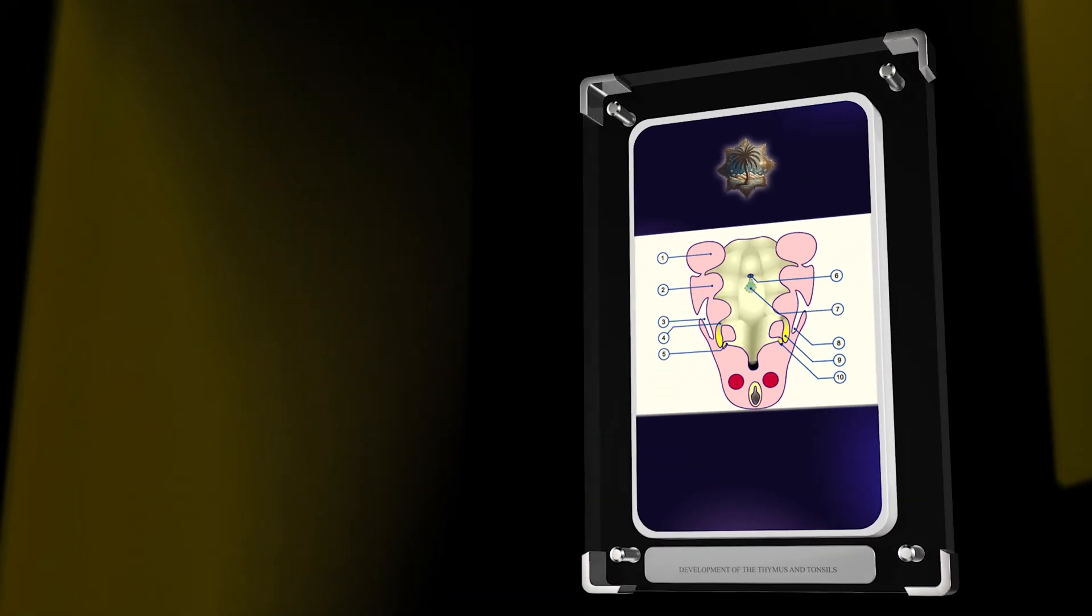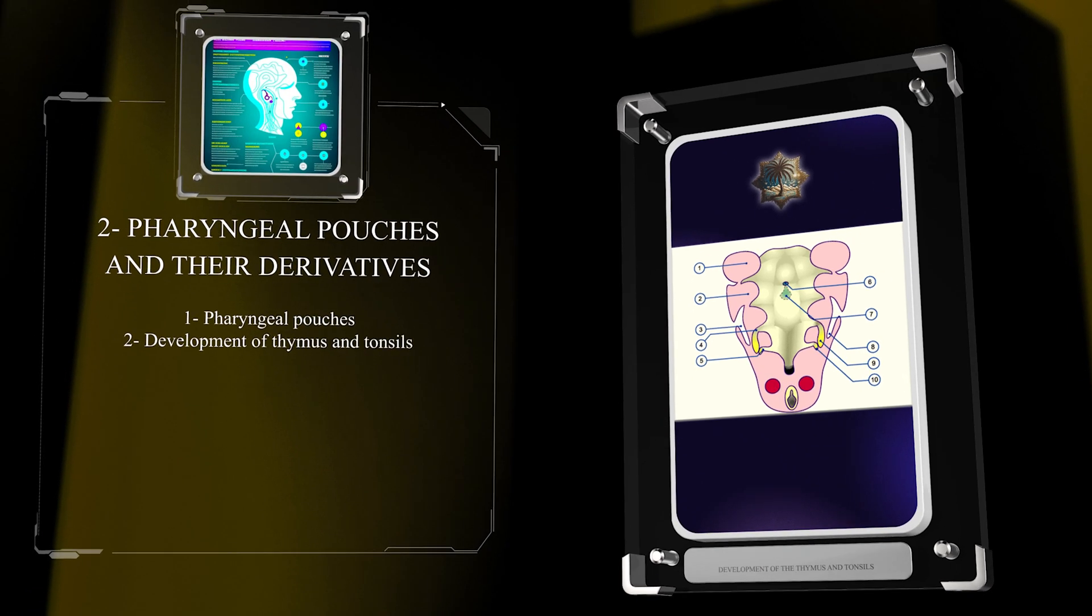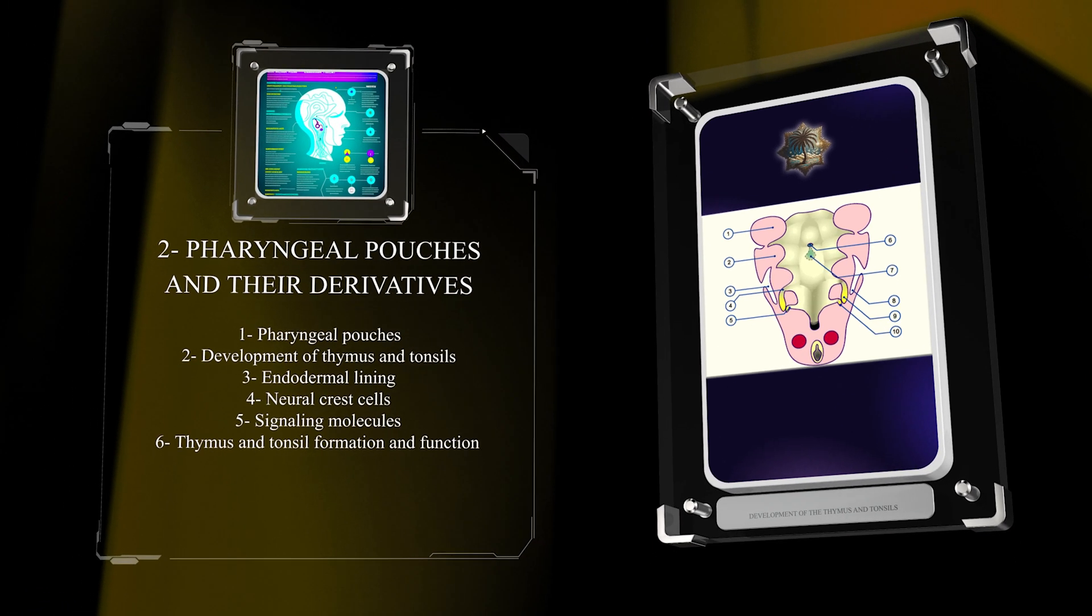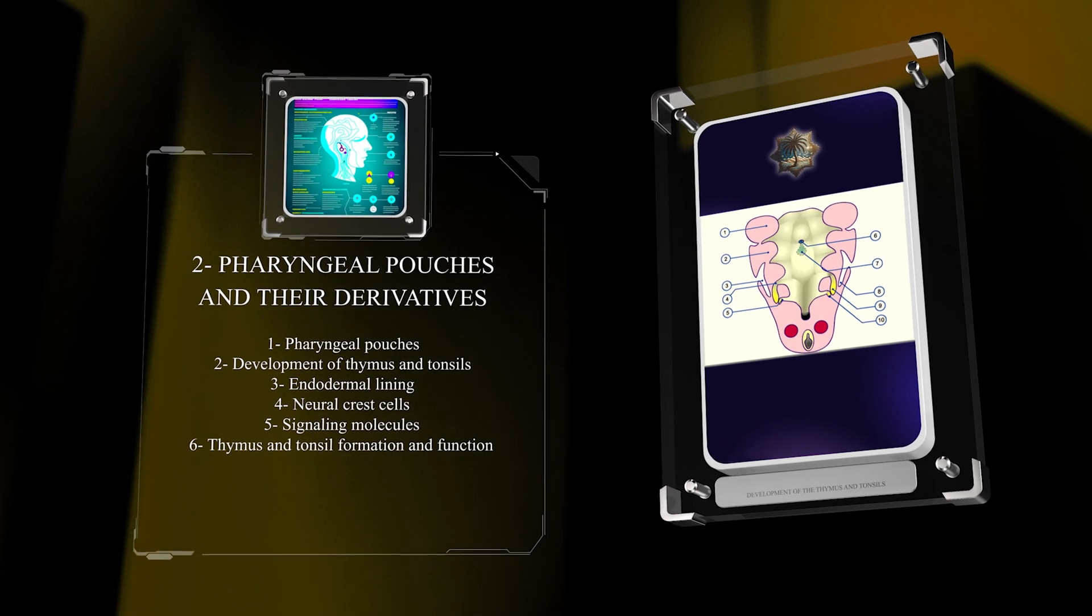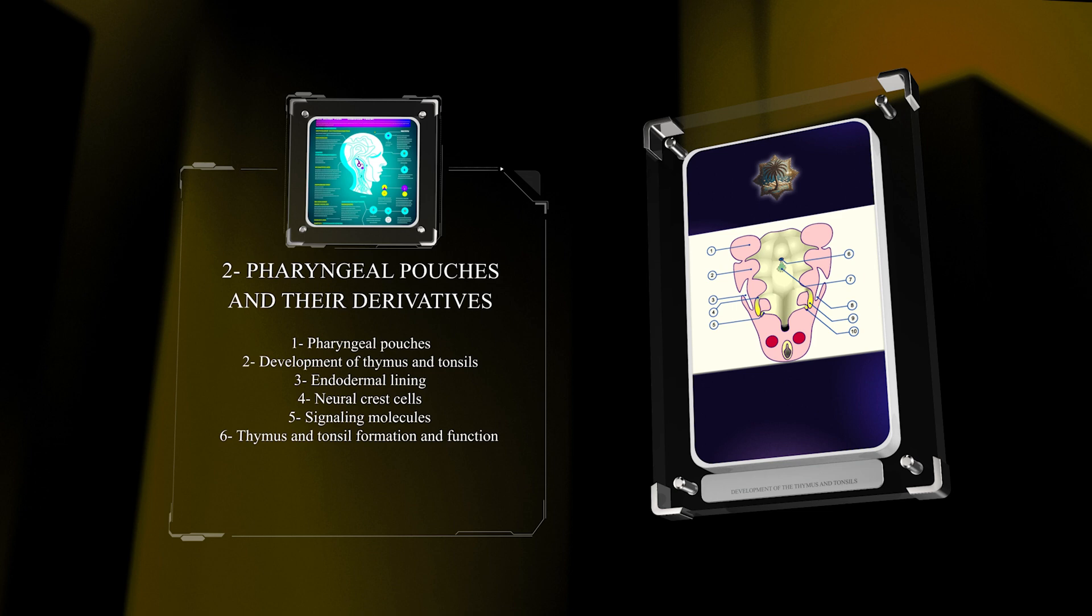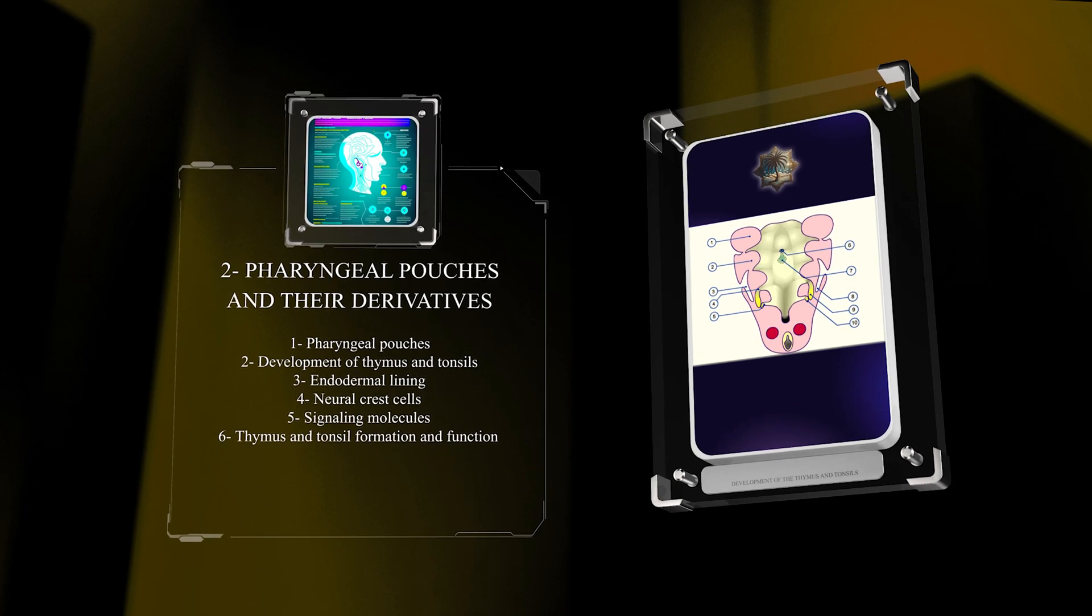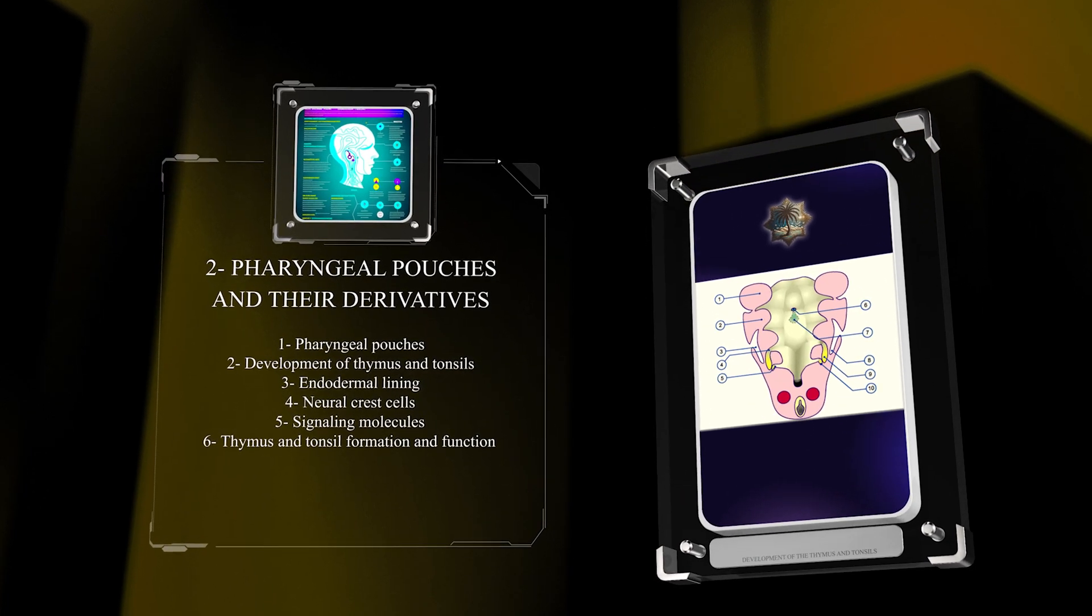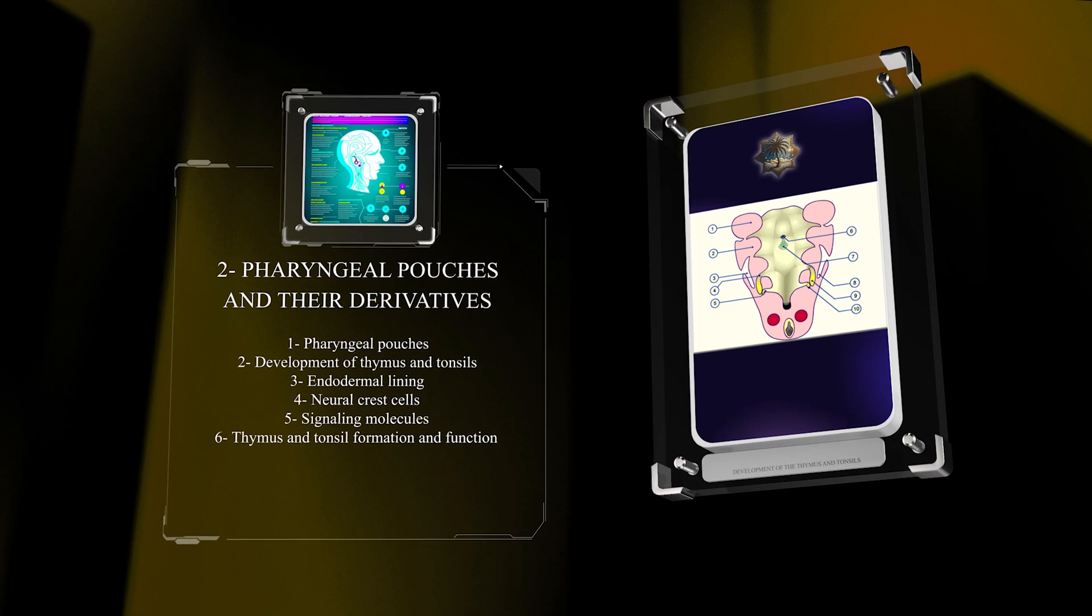Pharyngeal pouches play a key role in the development of the thymus and tonsils. These pouches originate from the endodermal lining of the pharynx and interact with neural crest cells to shape these structures. Signaling molecules mediate these interactions, ensuring proper development. Understanding this interplay is crucial for understanding thymus and tonsil formation and function.